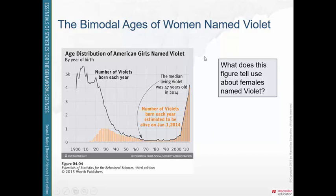This example from the textbook shows bimodal ages of women named Violet. We see many Violets born in the early 1900s, then a quick drop-off, and then a new mode emerging around 2010 — with many children being named Violet again now. So we've got two modes: one peak early in the century and one more recent peak.